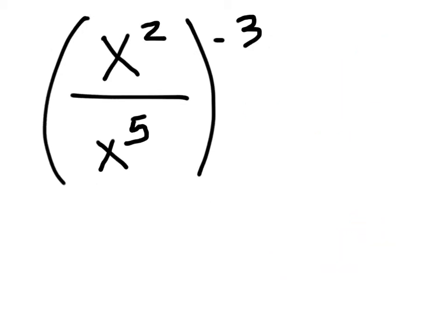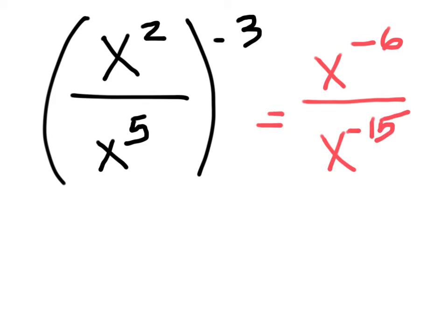Another problem results in x to the negative sixth over x to the negative fifteenth. Simplifying using division of same bases: negative six minus negative fifteen equals positive nine, so the final answer is x to the ninth.